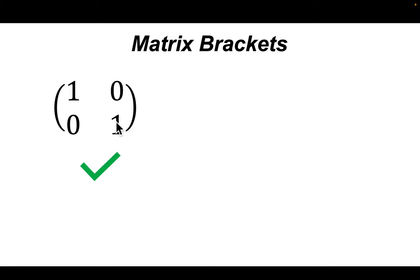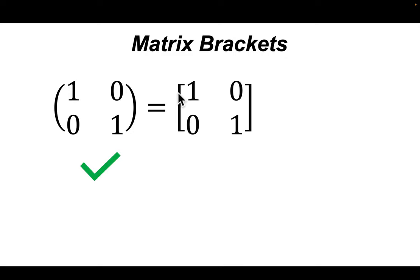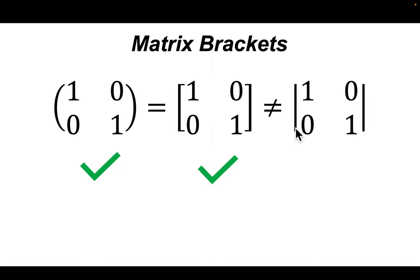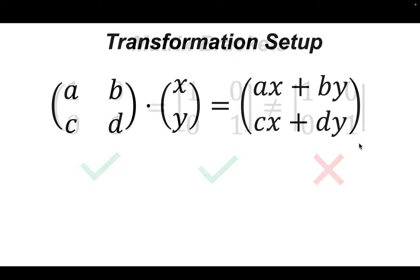This is one way to write matrices using these parentheses here — this is what I will typically use. You can also use these kind of squarish brackets, but be careful not to use these vertical lines. That represents a determinant in matrix algebra, not a matrix as we're using today. We're using these two types of notations, primarily the parentheses. Watch out for those vertical lines.